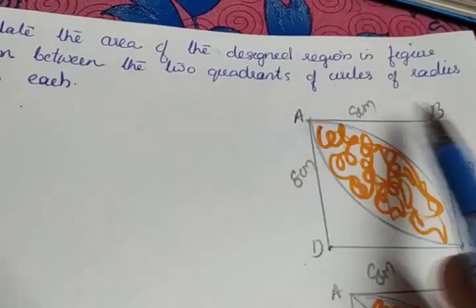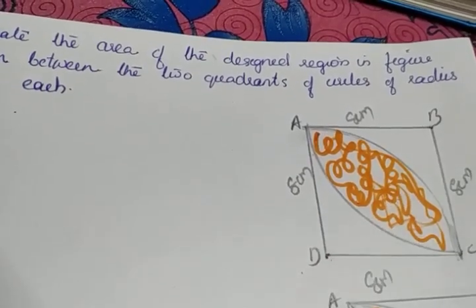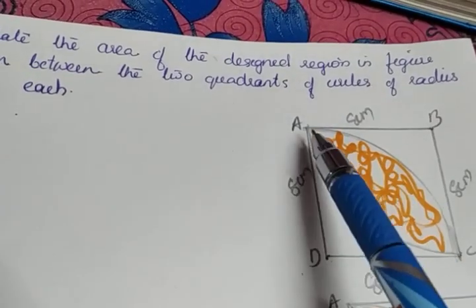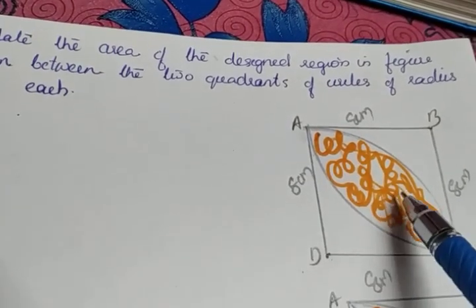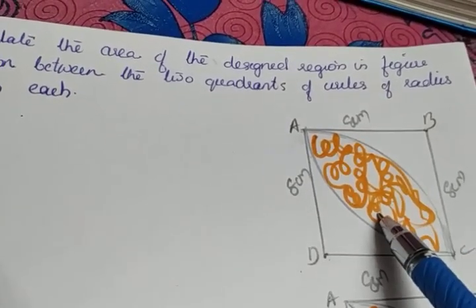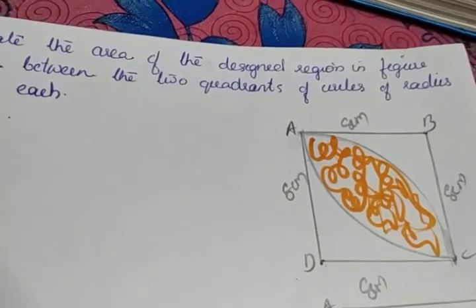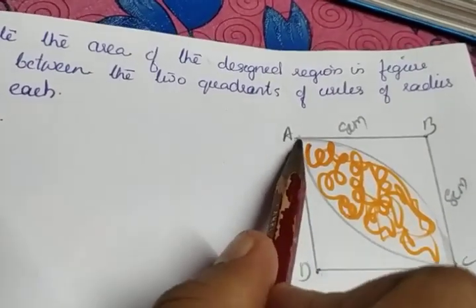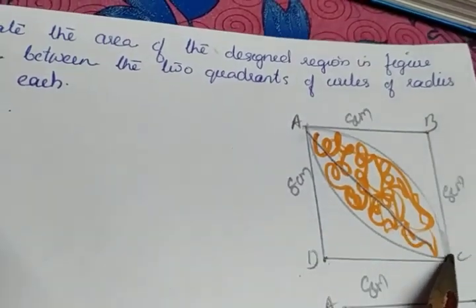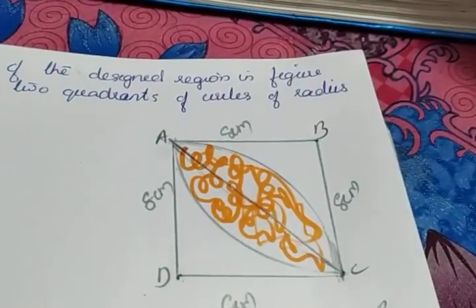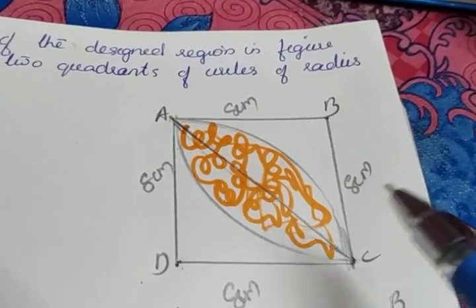The figure ABCD is a square. We need to find the designed portion. What I am going to do is join AC. That AC divides the shaded region, or designed region, into two equal halves.